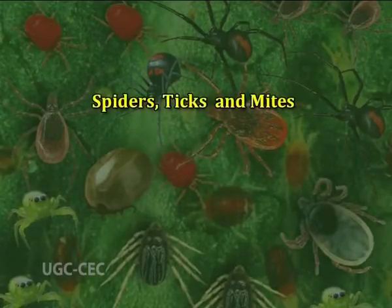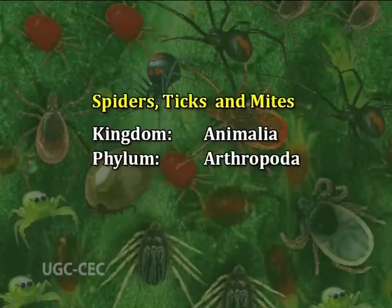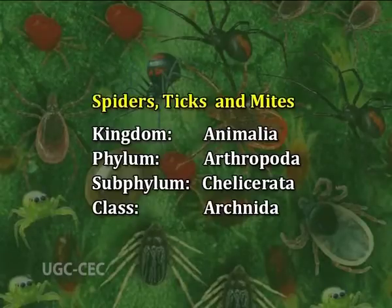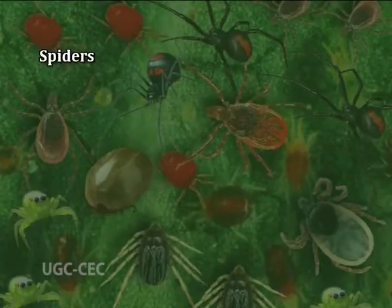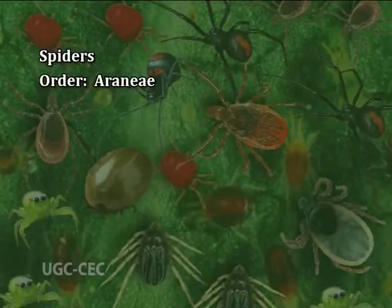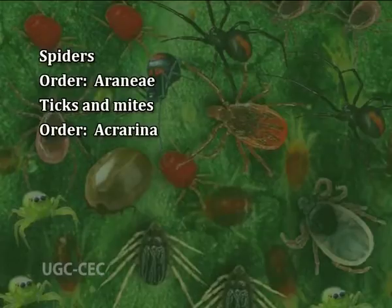These all are included in kingdom Animalia, phylum Arthropoda, subphylum Chelicerata and class Arachnida, but spiders are in order Araneae whereas ticks and mites belong to order Acarina in animal kingdom, followed by the above categorization.